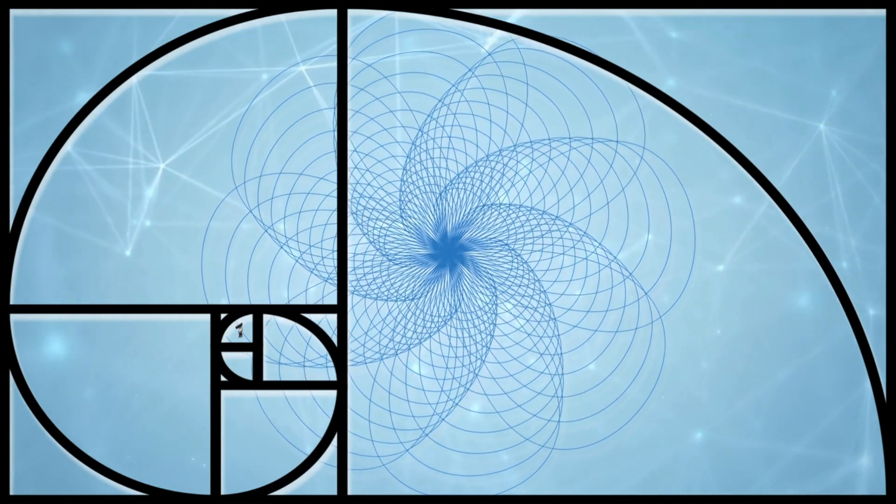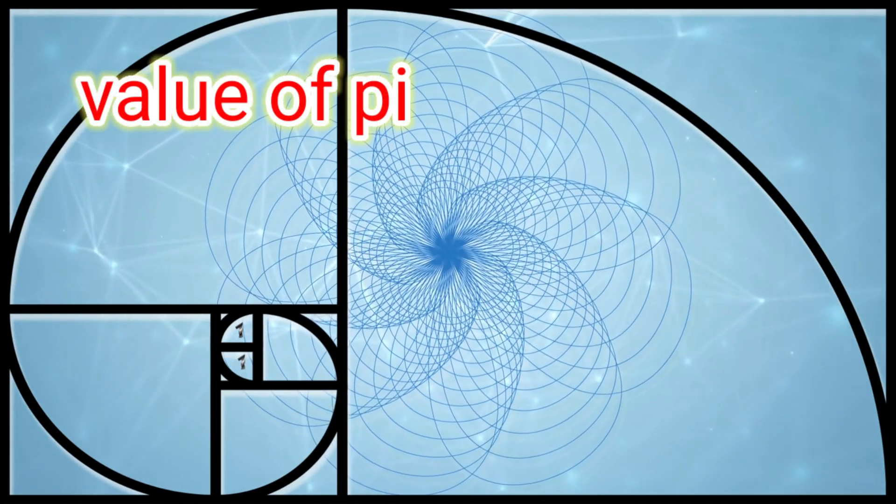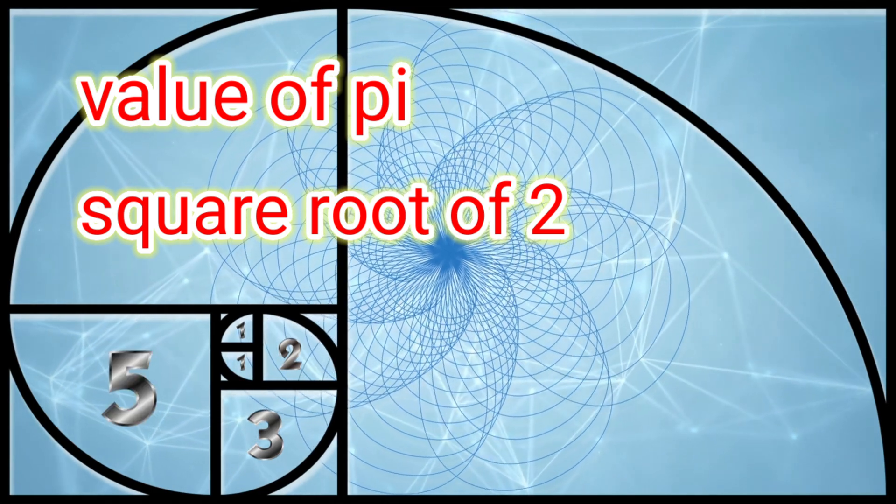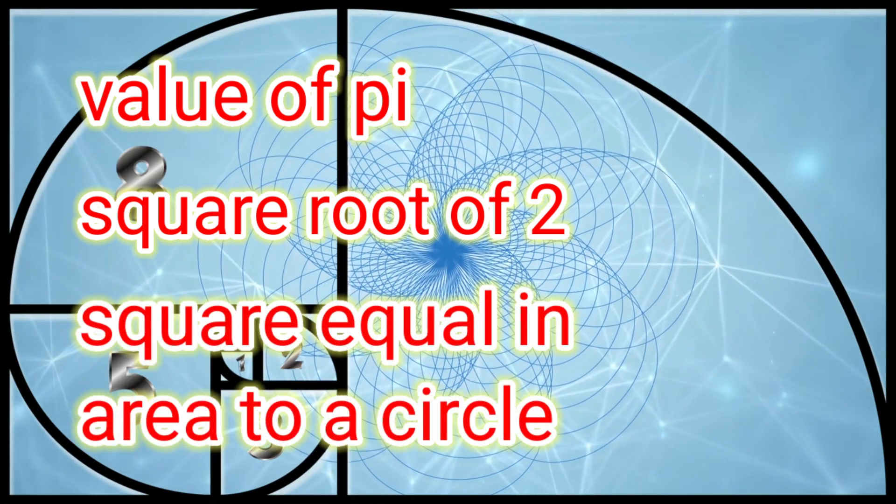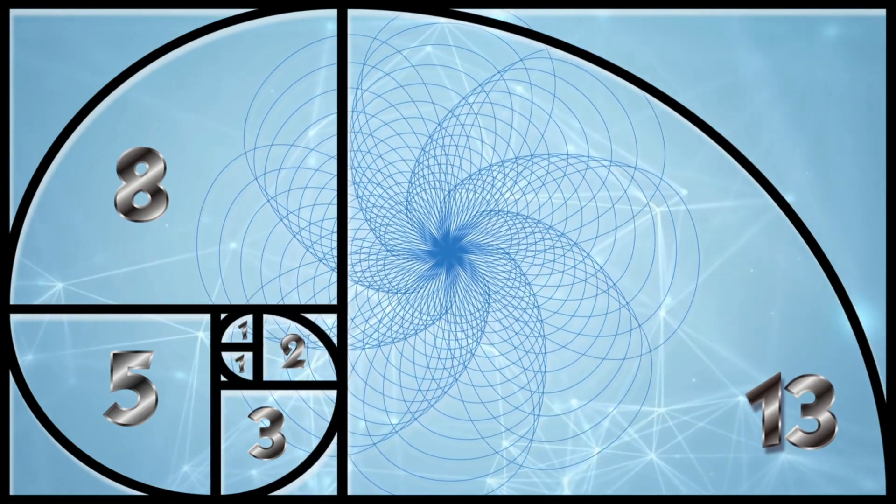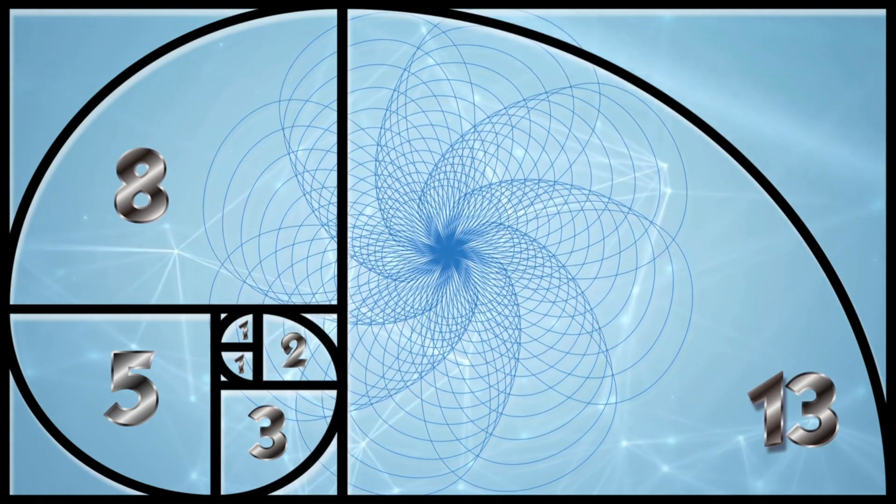In Shulba Sutra, Baudhāyana also calculated the value of Pi. He also showed how to calculate square root of 2. He also demonstrates how to construct a square equal in area to a circle. His work Shulba Sutra is the first text of geometry. But why has it gone unrecognized?